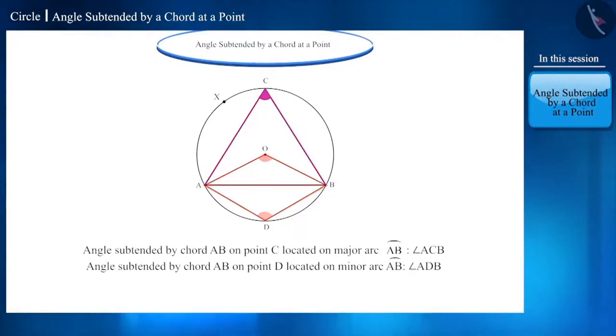Angle ACB and angle ADB are angles subtended by chord AB at points C and D located at major arc AB and minor arc AB respectively. Angle AOB is the angle subtended by chord AB at center O.